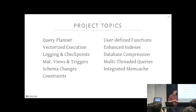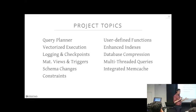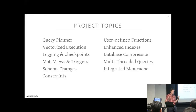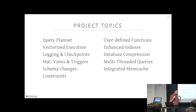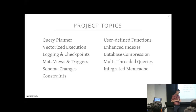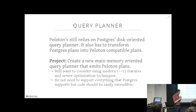Now I want to spend some time talking about some potential project topics you could pursue for project three. This is by no means an exhaustive list — these are just some ideas that Joy and I have thought through that might be interesting. If there's something you're doing in your own research that you want to apply to our system, by all means you can do that as well. I'm going to go through each one by one and say what it is and what you'd actually have to do in the system to complete it.